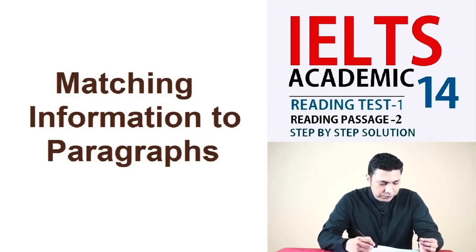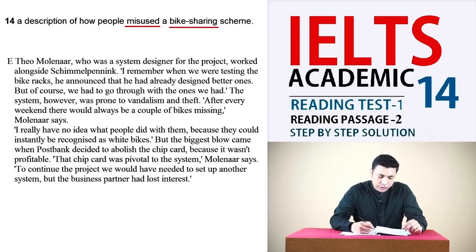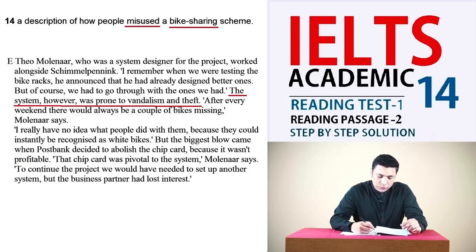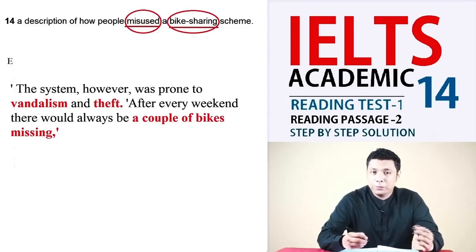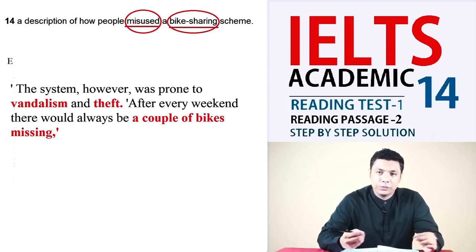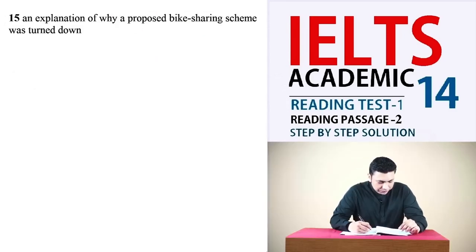Let's start: 'A description of how people misused a bike sharing scheme.' Keywords in this question are 'misused' and 'bike sharing.' In paragraph E, we find a reference to some problems the designers were facing. The writer says the system was prone to vandalism and theft — after every weekend there would always be a couple of bikes missing. This explains how people misused a bike sharing scheme through vandalism and theft, so the answer is E.